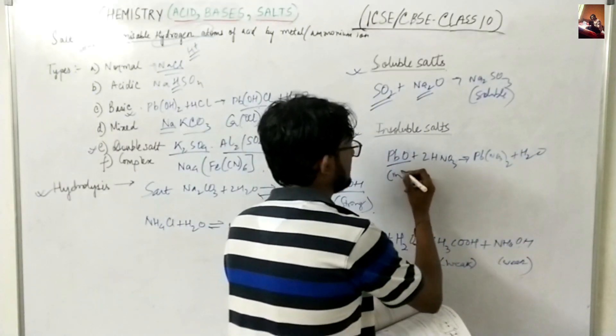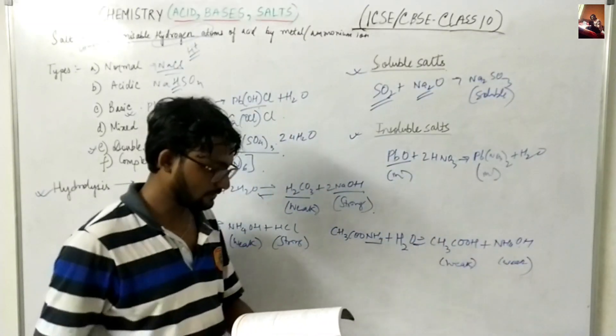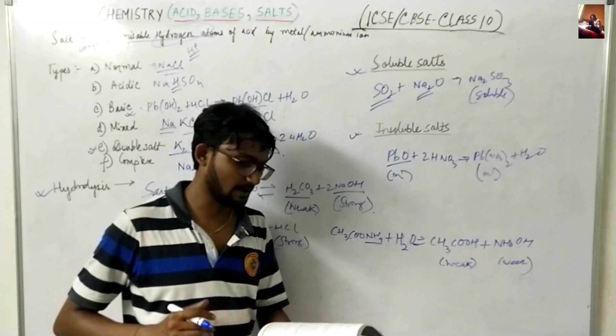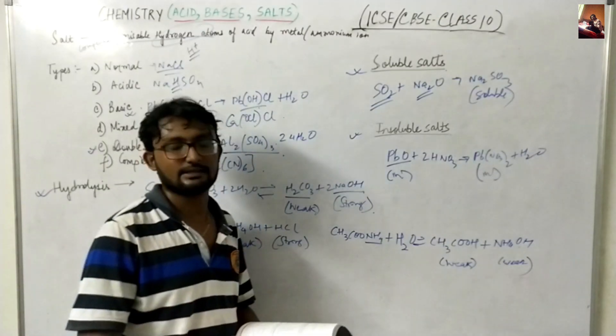So PbO plus HNO3 will give you Pb(NO3)2 plus H2O. So this is also insoluble. This is also insoluble. So from insoluble PbO we are forming like an insoluble salt from the insoluble, another insoluble compound.